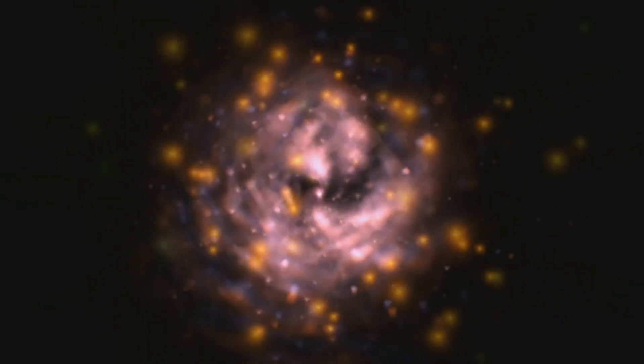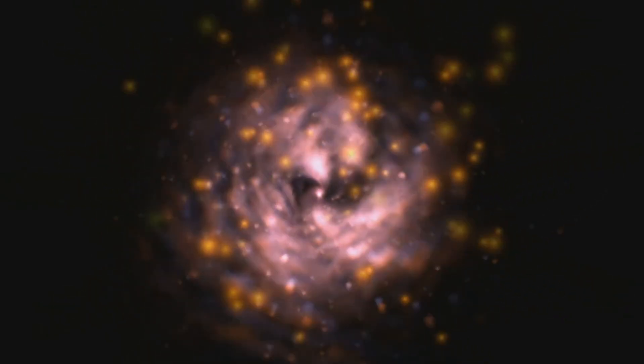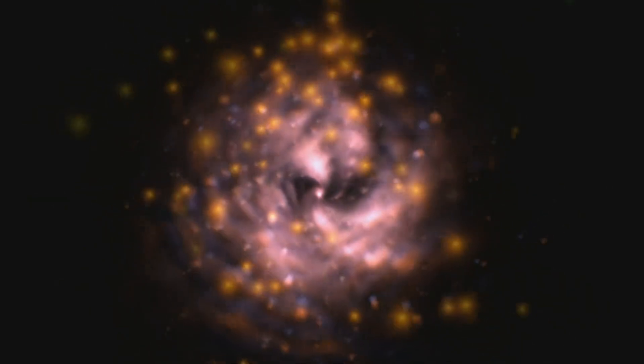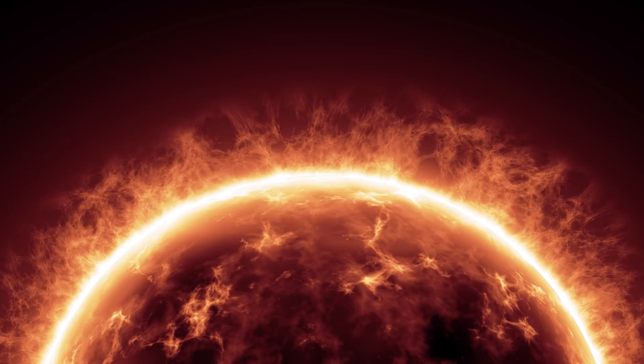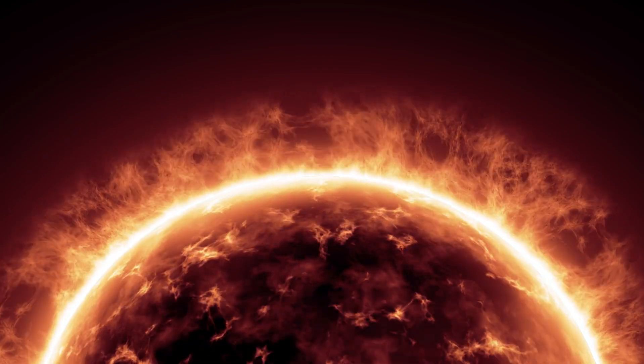Betelgeuse, a red star, loses about one solar mass every 10,000 years as material is ejected unevenly from the star in all directions, resulting in a nebula surrounding the red star.